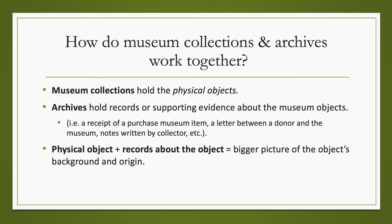you will find records or supporting evidence about the museum object. This could be a purchase receipt, a letter between the donor and the museum, or even notes written by the collectors when it was first collected. With both the physical object and the records about the object, you get a bigger picture of the object's background and origin.